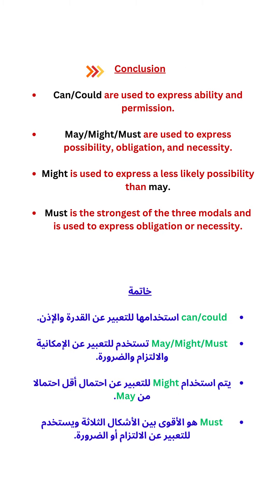Conclusion: Can and could are used to express ability and permission. May, might, and must are used to express possibility, obligation, and necessity. Might is used to express a less likely possibility than may. Must is the strongest of the three modals and is used to express obligation or necessity.